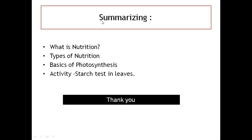So dear students, today we have learnt about what is nutrition and the types of nutrition, particularly about the autotrophic mode of nutrition, and the elements required for photosynthesis like carbon dioxide, water, chlorophyll and sun energy, and how to test the presence of starch in a leaf. Thank you.